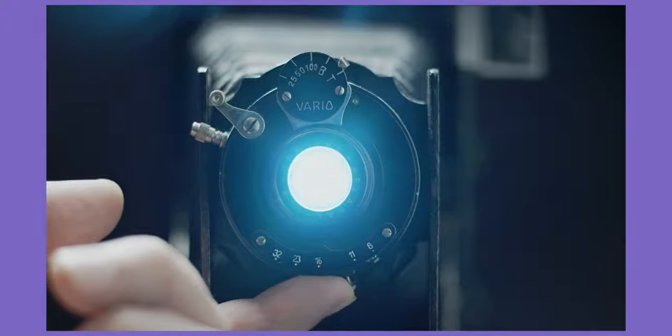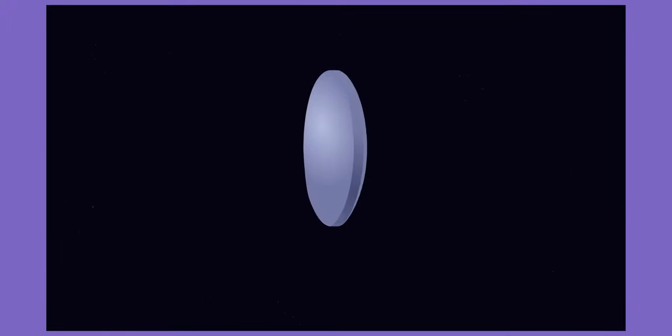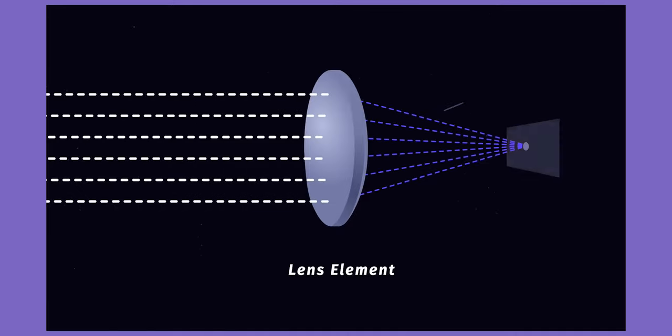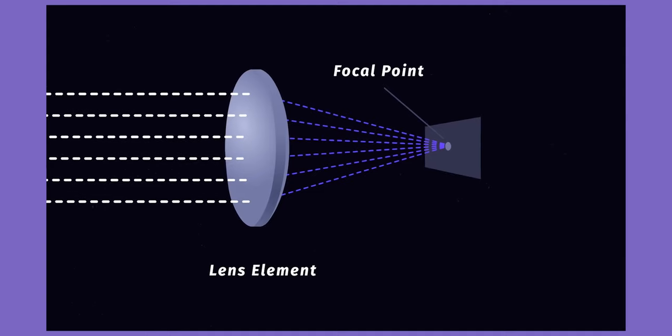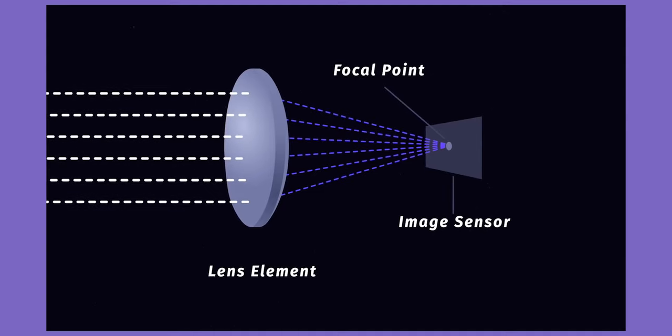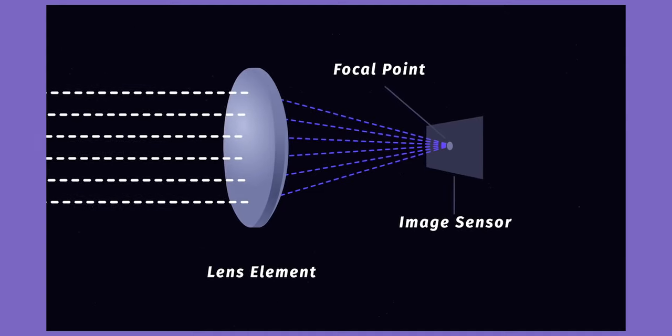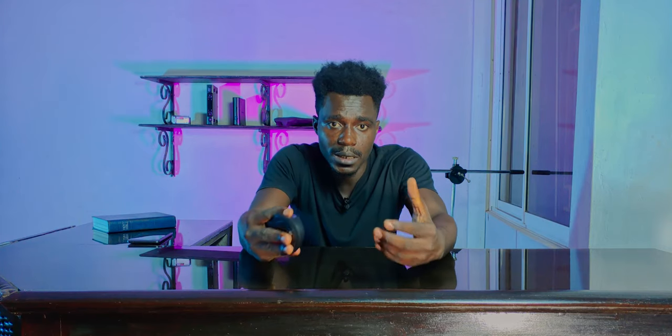A camera lens is an optical body that features a single lens or an assembly of lenses that mounts to a camera's body. Light passes into the lens and through different glass shapes called lens elements. These elements slightly bend or refract the light so it lands on a focal point called an image sensor — this is where the picture is created. Each lens is differentiated by its focal length, which is expressed in millimeters.